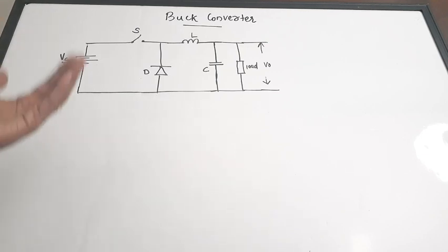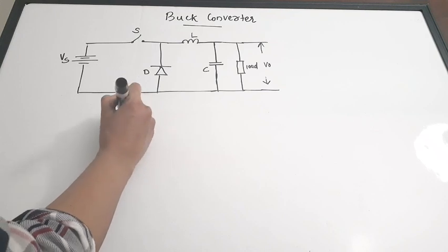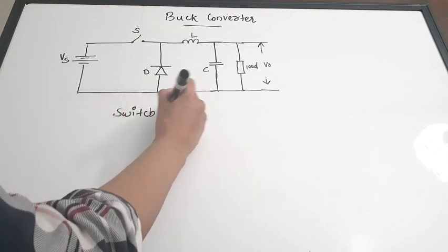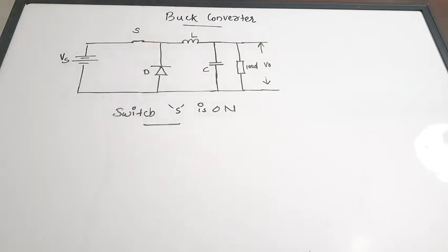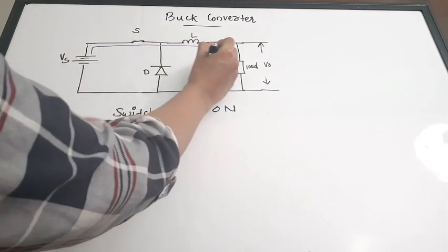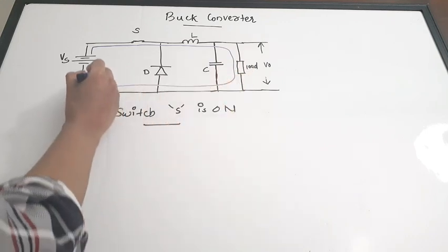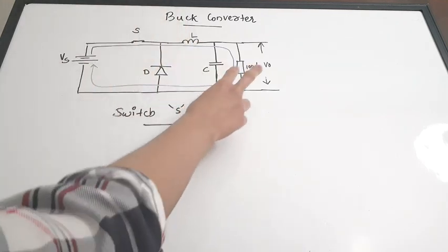The switch is a thyristor or SCR, which we turn on and turn off — and based on that, the buck converter works. First we look at the case when the switch S is ON. When the switch is on, it creates a closed path, and current starts to flow from the positive terminal of the supply source through the outer loop. The current passes through the inductor and also through the load.